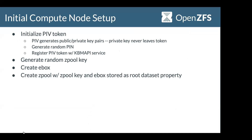When we first set up the compute node, we initialize the PIV tokens — when you first get them from the manufacturer they're blank, with no keys on them. The first thing we do is have it create the keys, which then never leave the token, so you don't have to worry about them leaking. Then we generate a random PIN, register it with the service, generate the pool key, create the e-box to store it, and create the ZFS pool. The e-box itself is a serialized structure — we encode it and store it as a ZFS user property on the root dataset of the pool. Since it's all encrypted, without the YubiKey and PIN you can't decrypt the ZFS pool key.